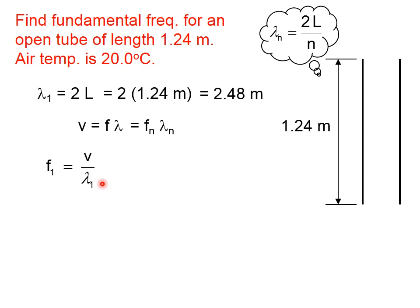The denominator, we know—that's 2.48 meters. But the numerator, the speed of the sound wave, isn't given in the problem. But in an earlier lesson, we gave an empirical relation for the speed of sound in air of a particular Celsius temperature. Here's that equation: 331 + 0.6T.